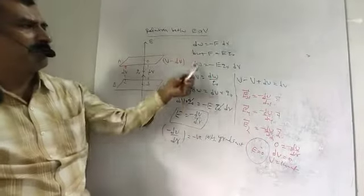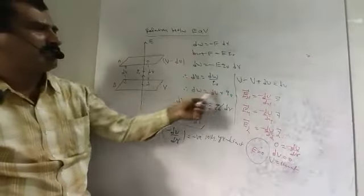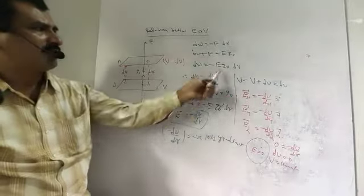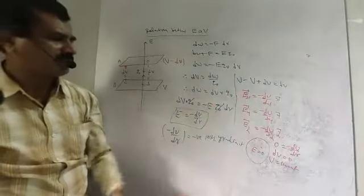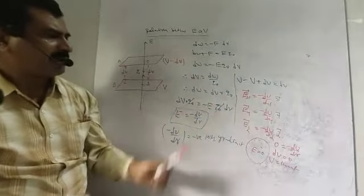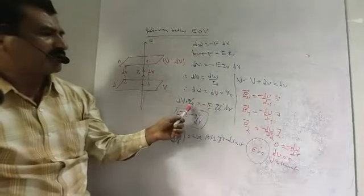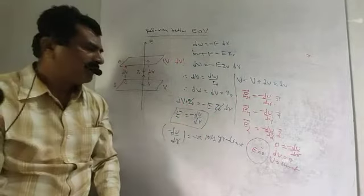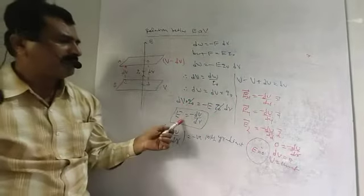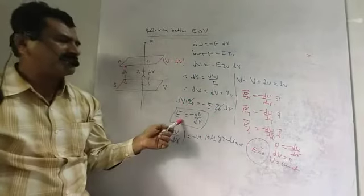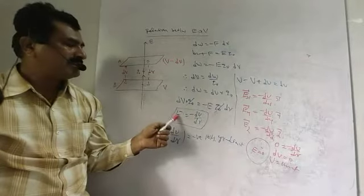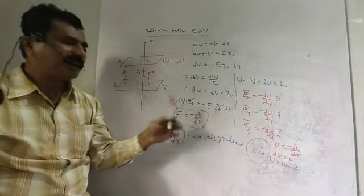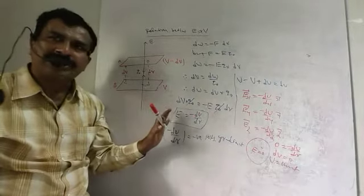Comparing the two expressions for DW: DV into Q0 equals minus E Q0 into DR. Cancelling Q0 from both sides, we get E equal to minus DV by DR. This is the equation for the relation between electric field and electric potential.